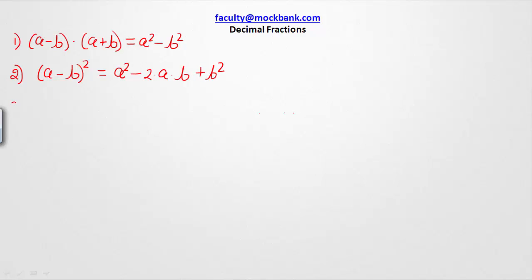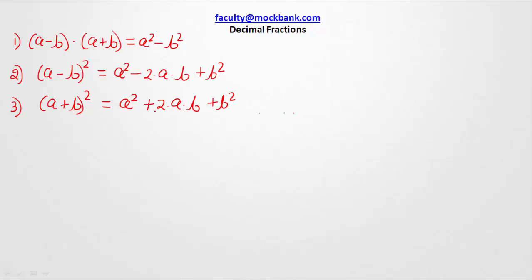The third rule is (a + b) whole square, and this value is a² + 2ab + b².